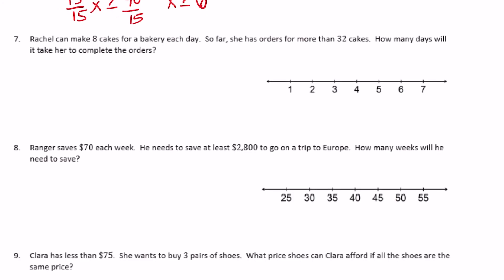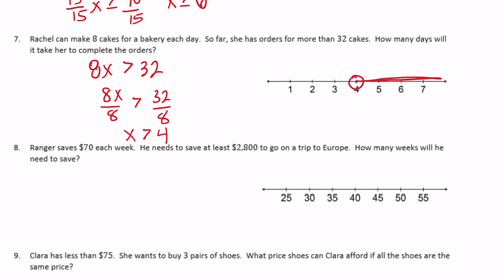Number 7: Rachel can make 8 cakes per day and has orders for more than 32 cakes. How many days will it take? So 8x is greater than 32. Dividing both sides by 8 gives x is greater than 4. She needs more than four days. On the graph, I circle 4 and leave it open because she needs more than four days.